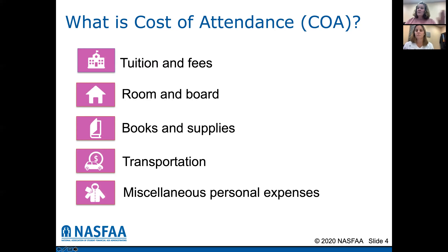These costs — some are direct expenses, which means they are directly billed to you: tuition and fees, and room and board for those students who live on campus. Books and supplies are always an indirect cost, which means you might be paying the bookstore, so you might not be paying the college directly for those. Transportation back and forth to school, depending on where you go, and miscellaneous personal expenses — those are things that will come up all the time while you're in school. So we build that into the cost of attendance.